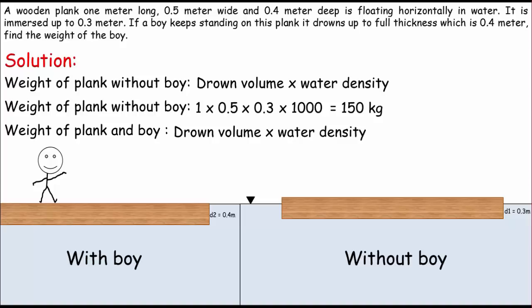Now the weight of the plank and boy together should be the drown volume of the plank after keeping the boy standing on it, times the density of water. So again, if you see, the length of plank is 1 meter times 0.5, which is the breadth, times 0.4, which is the drown depth of the plank.